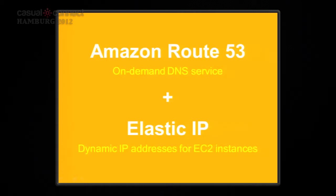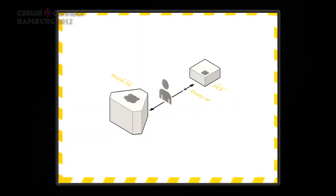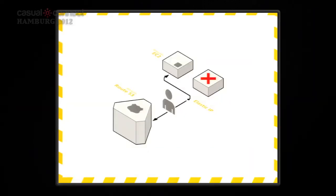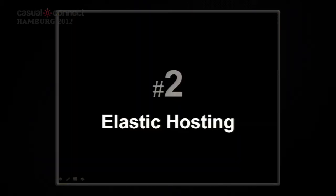This is the basic setup: you install your Apache server, your PHP application, and a DNS server that lets users reach a fancy domain name like mygame.com pointing to the instance. The Elastic IP allows you to redirect traffic to different instances — if you remove one instance you can reconnect the IP address to another one.